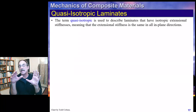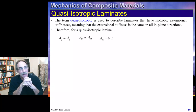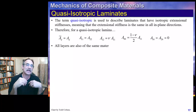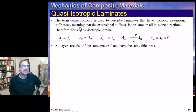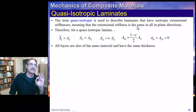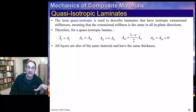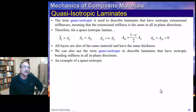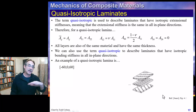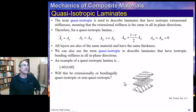A quasi-isotropic laminate is not truly isotropic but behaves almost like one. This term describes laminates where the extensional stiffnesses are the same in all in-plane directions. If the extensional stiffness is the same regardless of direction, that is considered quasi-isotropic for extension. We can also have quasi-isotropic behavior for bending if bending stiffness is the same in all directions, so a laminate can be quasi-isotropic extensionally, in bending, or both.